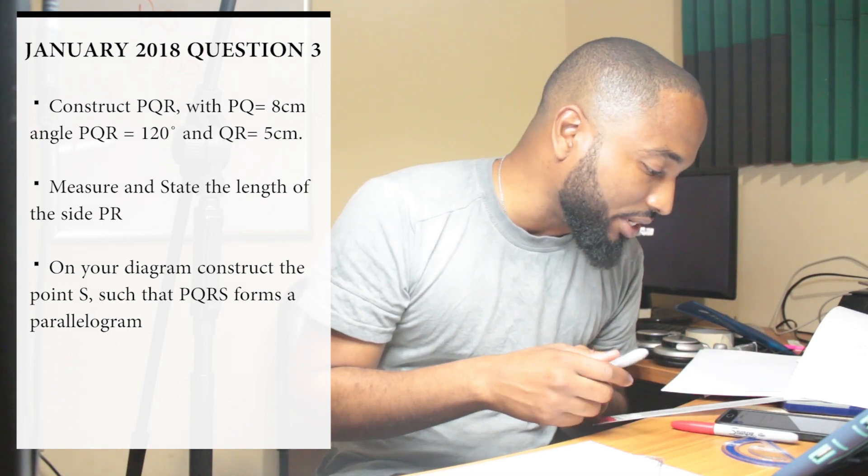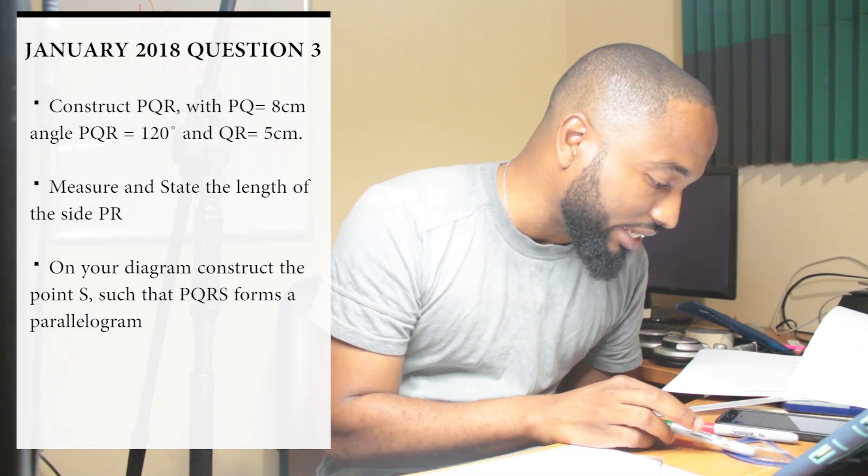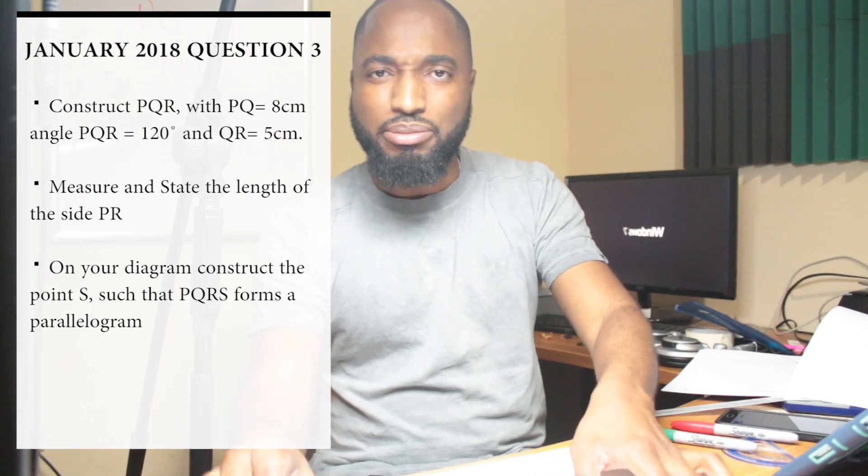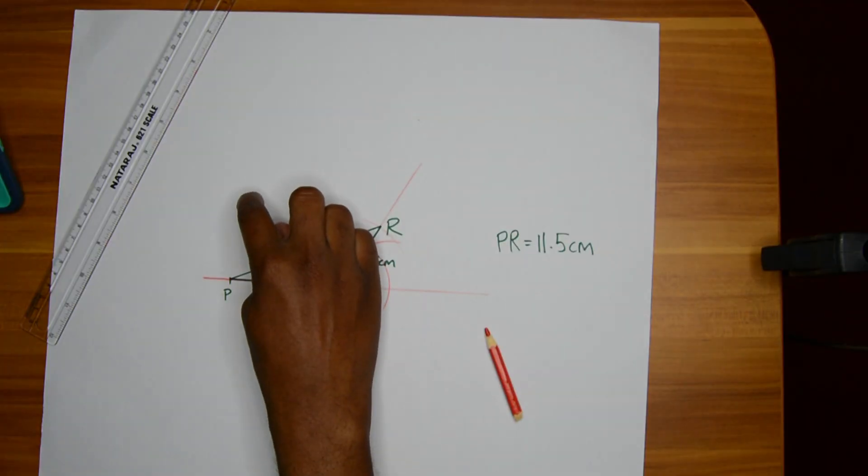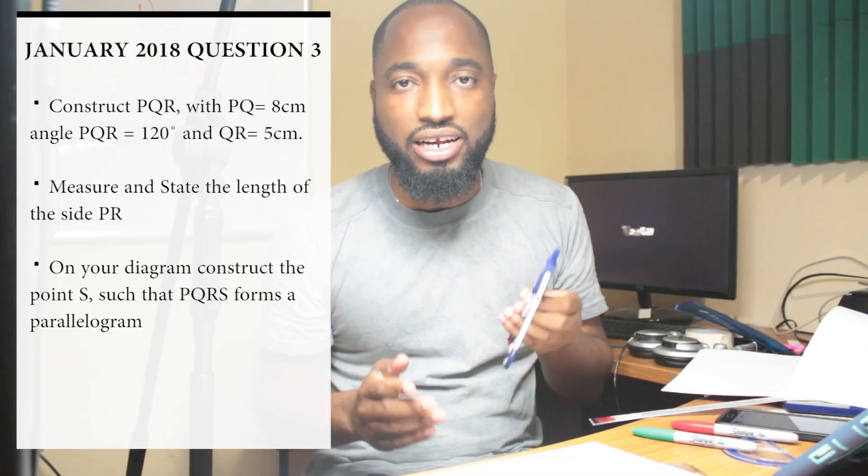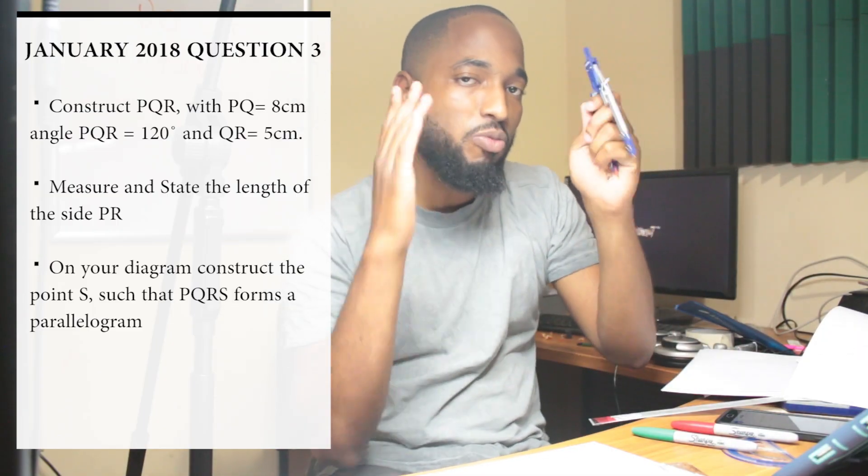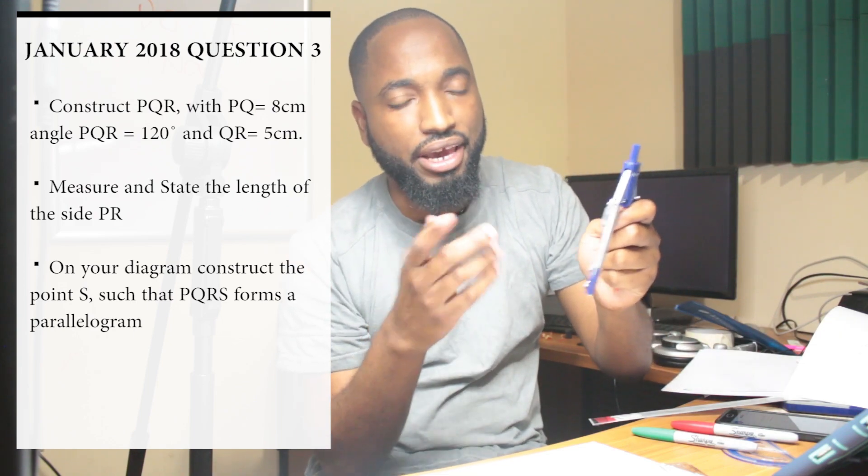Next up: on your diagram construct the point S such that PQRS forms a parallelogram. Well that's simple. If we need to construct a point S that forms a parallelogram, parallelograms have two pairs of equal and parallel sides.